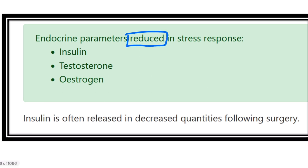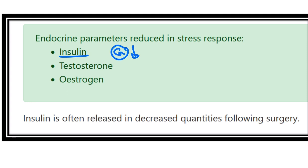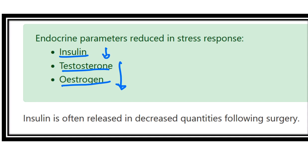First, we can see the endocrine parameters that reduce in the stress response or metabolic response to injury. First is insulin — insulin decreases glucose. Do we want glucose to be reduced at this moment? No, that is not good for this condition, so insulin is reduced. The second option is testosterone and estrogen — in this emergency condition, it is important to save life; this is not the time for reproductive activity, so testosterone and estrogen also reduce.